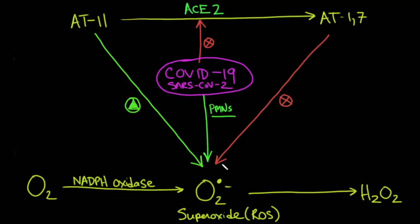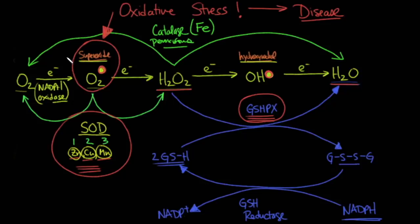There's also a deficiency of angiotensin 1-7, which inhibits the production of superoxide through a nitric oxide mediator. In addition, COVID-19 itself attracts PMNs — neutrophils — which also cause production of superoxide. That superoxide leads to production of hydrogen peroxide and a whole bunch of other hydroxy radicals, which can cause oxidation and destruction of endothelial cells and possibly even thrombosis.